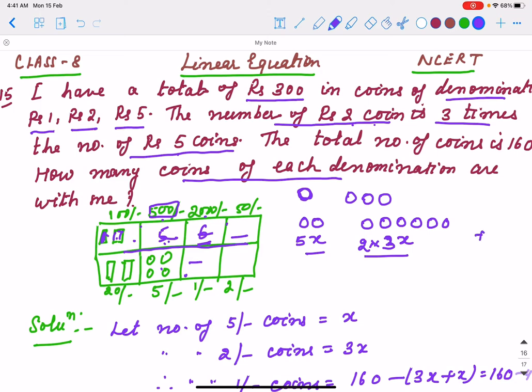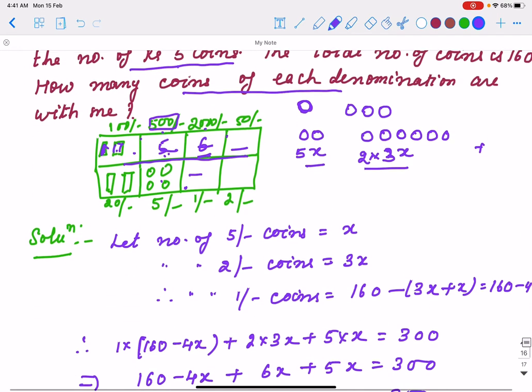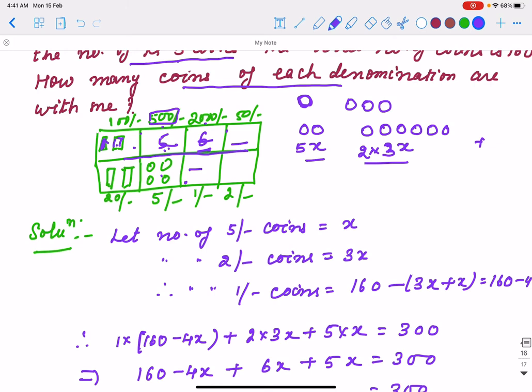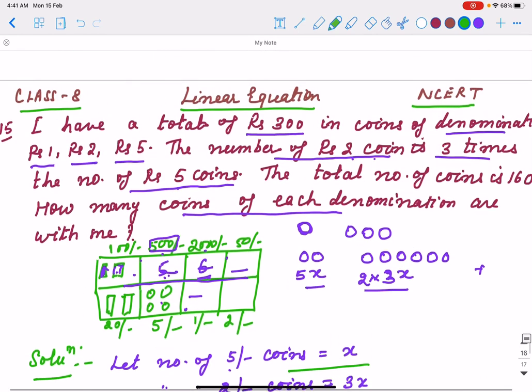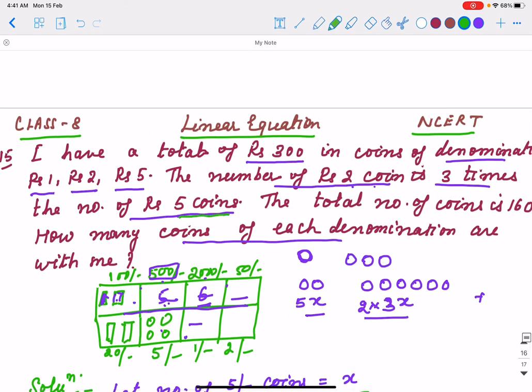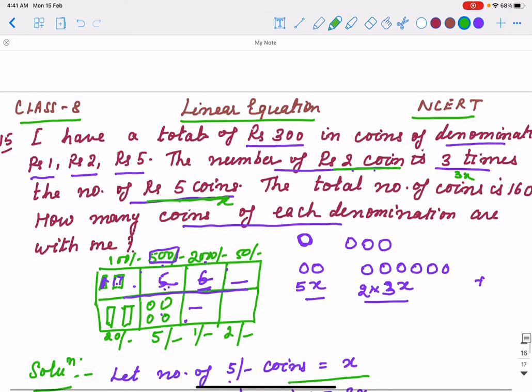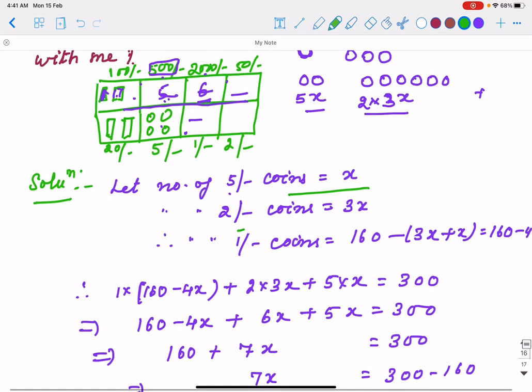The same way we're doing here. Let the number of 5 rupee coins be how much? If you see in the question, the relation is between 5 rupee coins and 2 rupee coins. So we suppose: 5 rupee coins are x, 2 rupee coins are 3x.